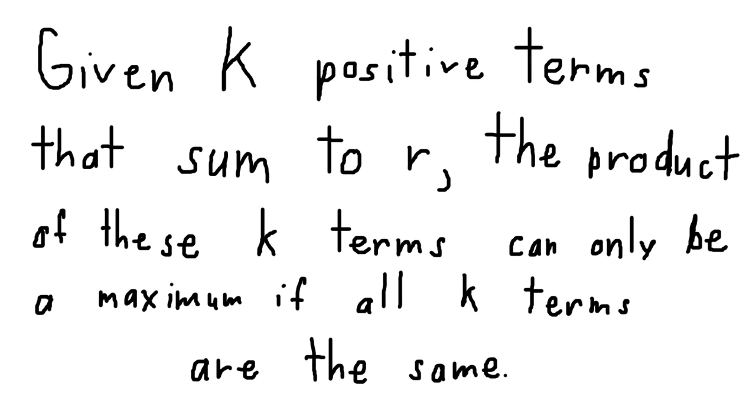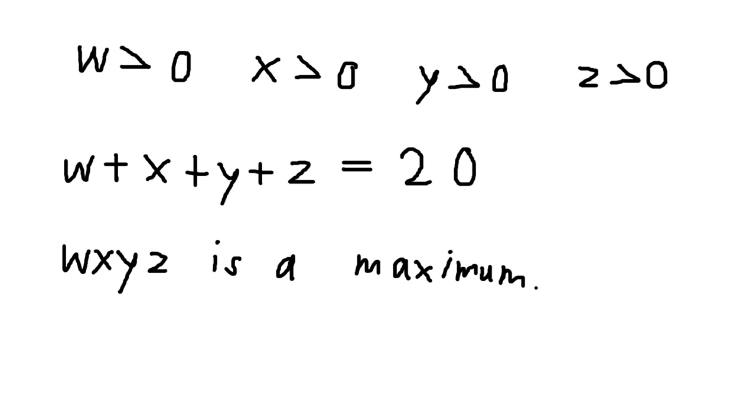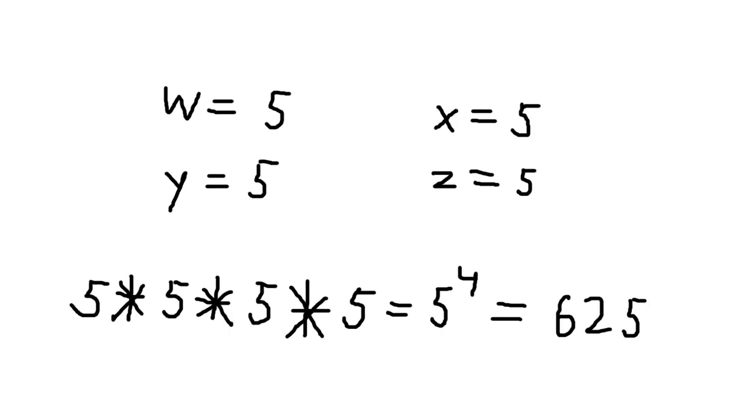If I took the same example where we have numbers that sum up to 20, but I permitted you to use 4 numbers, which would you pick? Personally my money would be on 5, 5, 5, and 5. 5 to the power of 4 is equal to 625, which is the maximum product of 4 positive integers that sum to 20.